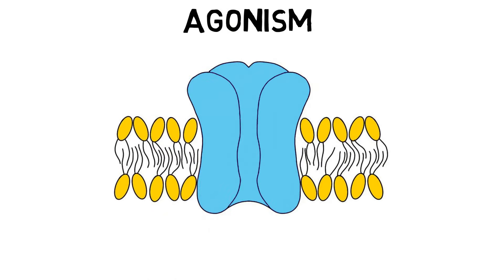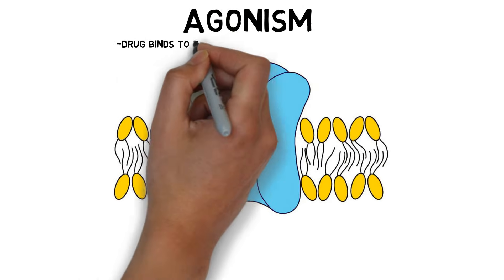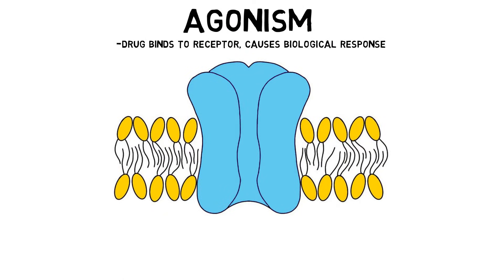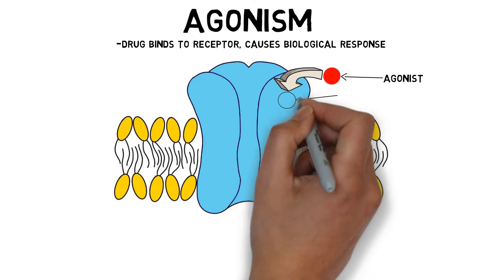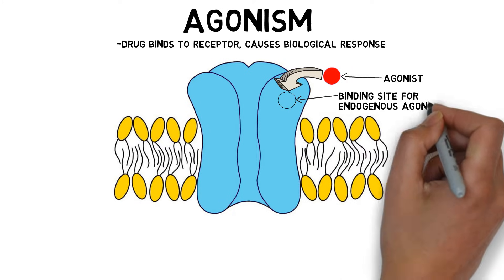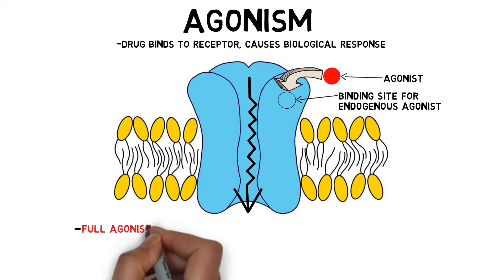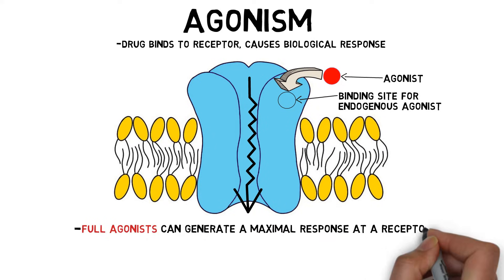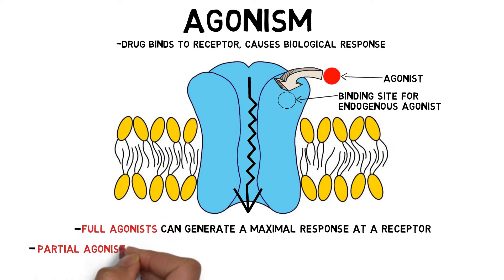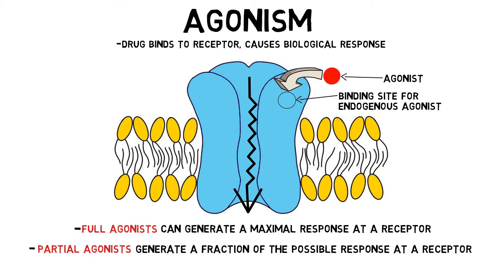Agonism occurs when a drug binds to a receptor and causes a biological response. Agonist drugs typically bind to the same place on the receptor as the substance that naturally activates the receptor, or the endogenous agonist. Agonists that can generate a maximal response at a receptor are called full agonists. Partial agonists are only able to generate a fraction of the possible response at a receptor.